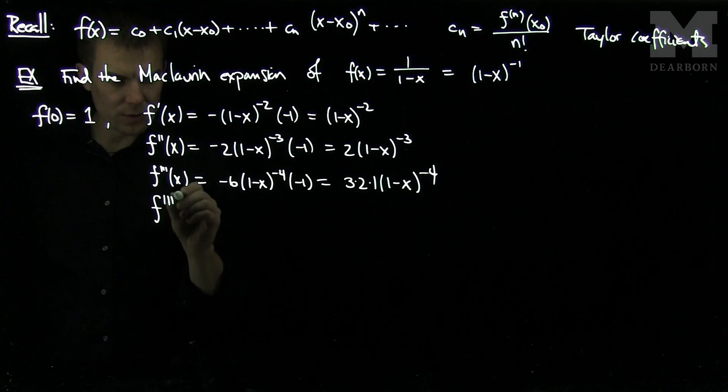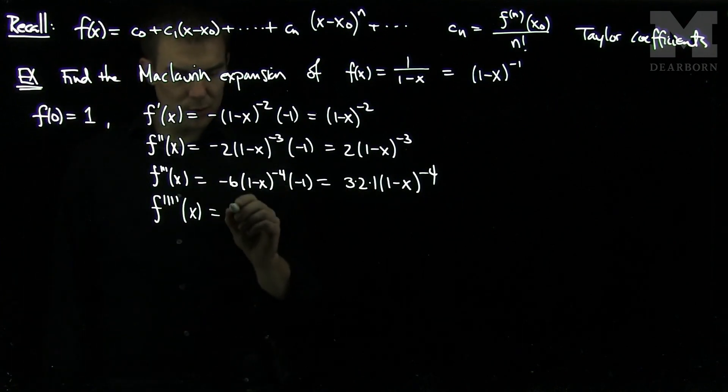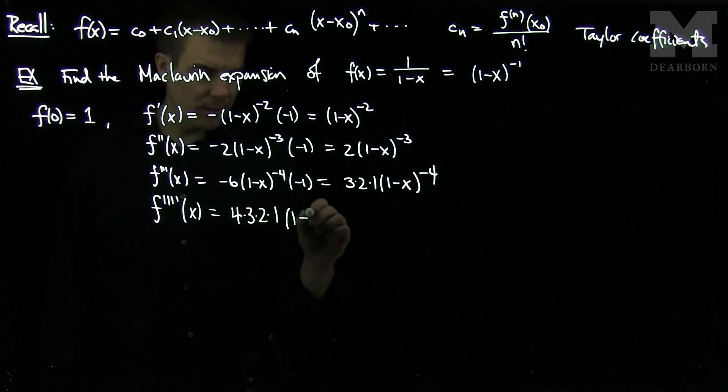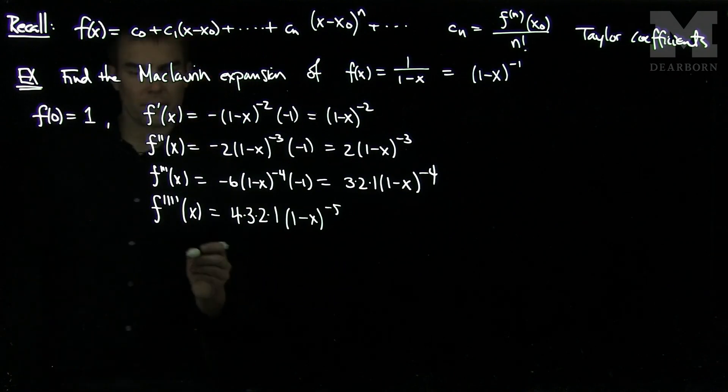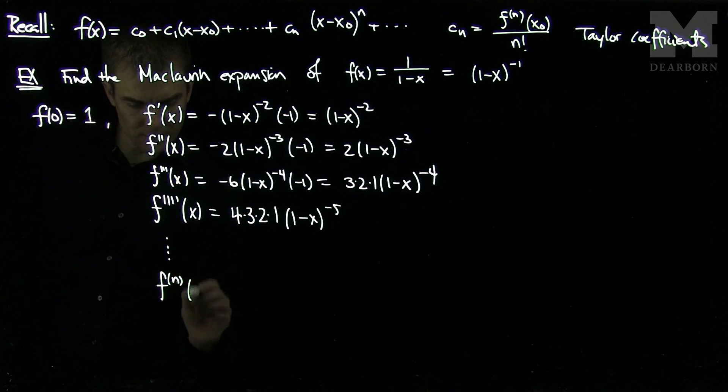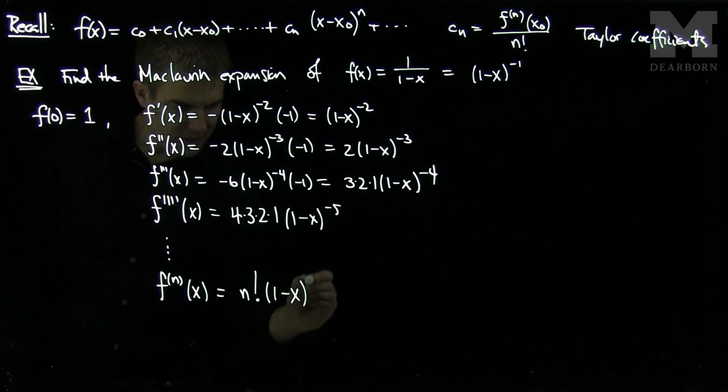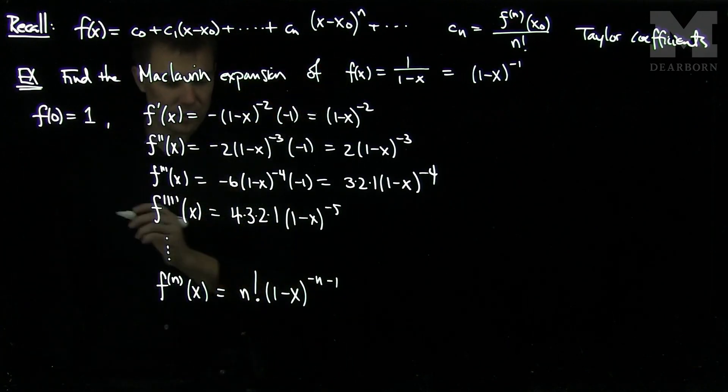And it looks like if we do 4 derivatives, we're going to have 4 times 3 times 2 times 1 times (1 minus x) to the negative 5. And now we can find the general formula for this. So the general formula is that the nth derivative of this function at x will be n factorial times (1 minus x) to the negative n minus 1. There's one more n here than there is over there, so that's the general formula.